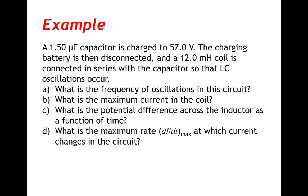A 1.50 microfarad capacitor is charged to 57 volts. The charging battery is then disconnected, and a 12.0 mH coil is connected in series with the capacitor so that LC oscillations occur. We need to find: the frequency of oscillations, the maximum current in the coil, the potential difference across the inductor as a function of time, and the maximum rate at which current changes in this circuit.